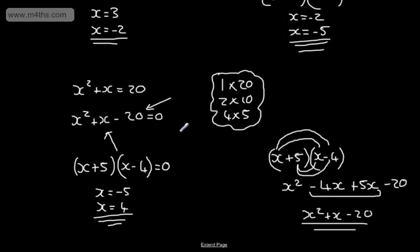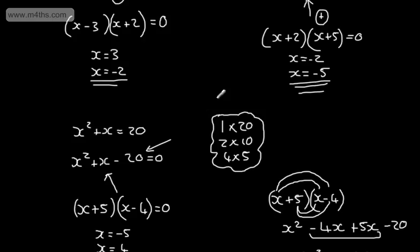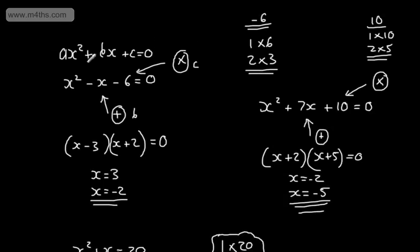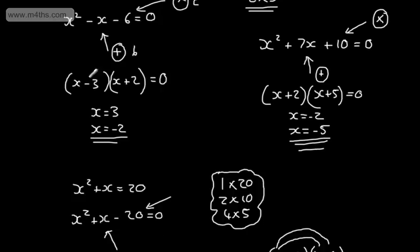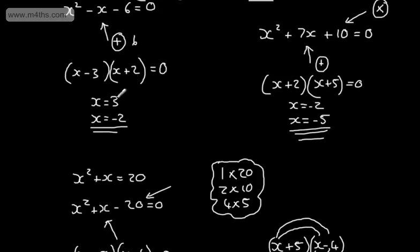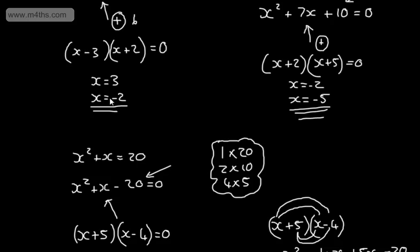So those are some basic examples. We put the equation in the form ax squared plus bx plus c equals zero, factor by finding two numbers that multiply to give c and add to give b, put those in brackets, and set each factor equal to zero. We solve by writing the opposite value to the sign.